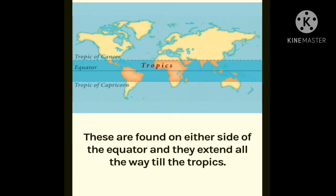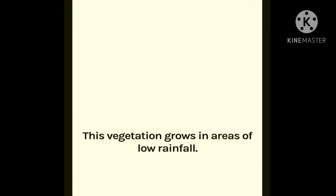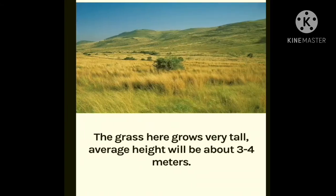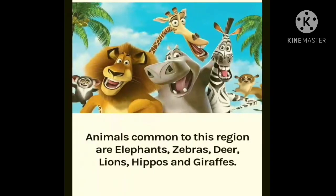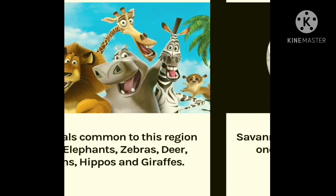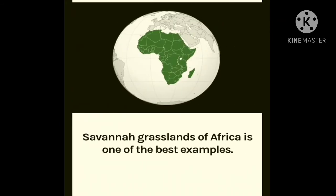The first type is the tropical grassland. These are found on either side of the equator and they extend all the way till the tropics. This vegetation grows in areas of low rainfall. The grass here grows very tall, with an average height of about 3 to 4 meters. Animals common to this region are elephants, zebras, deer, lions, hippos and giraffes. The Savanna grassland of Africa is one of the best examples.